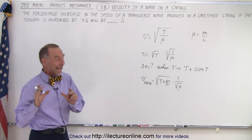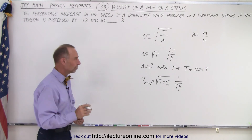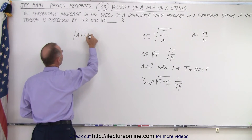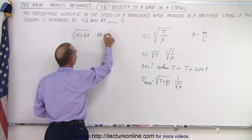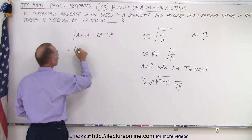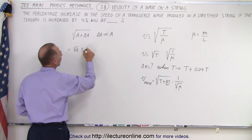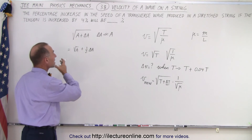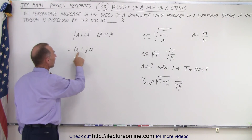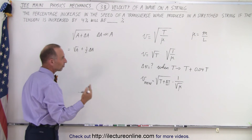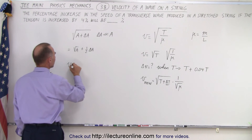And there's a rule that comes in really handy that makes this problem relatively easy. The rule is as follows: if we take the square root of A plus delta A, where delta A is much, much smaller than A, this can be written as the square root of A plus 1 half times delta A. In other words, we can take that out of the square root sign and simply say that it's 1 half times the change in A. Only if this is much smaller than that. So essentially, what we have here is V — or the new V.